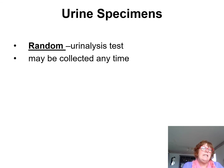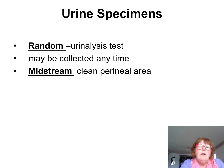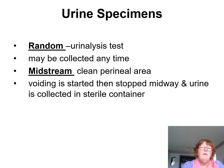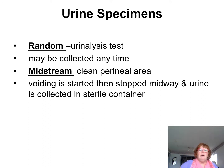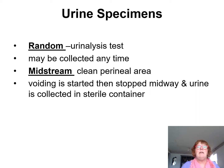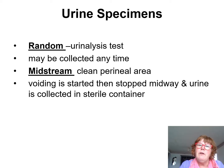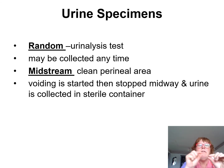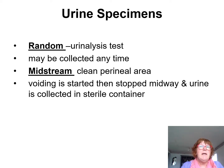For a midstream specimen, you clean the perineal area, voiding is started, then stopped midway, and the urine is collected in a sterile container. It's very difficult to catch on most clients, but if you wash the perineum and put on a glove with the container ready, once they start peeing you stick it underneath. You don't need the container full — very few tests require a full container; just a small amount on the bottom of the jar.